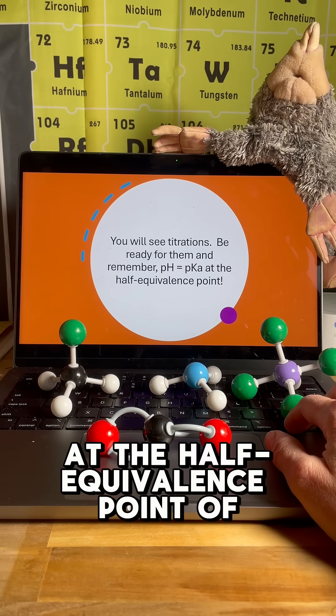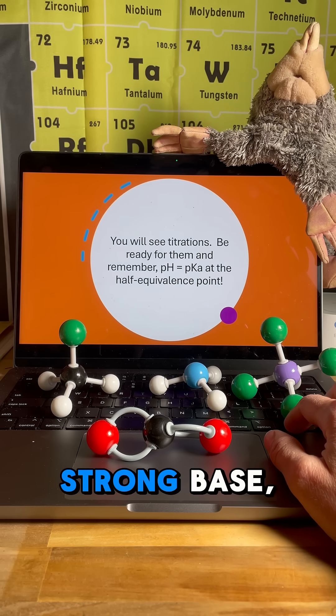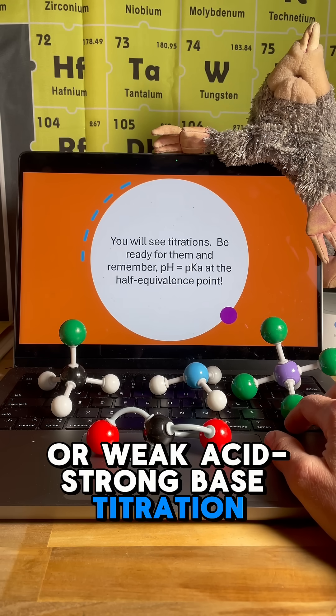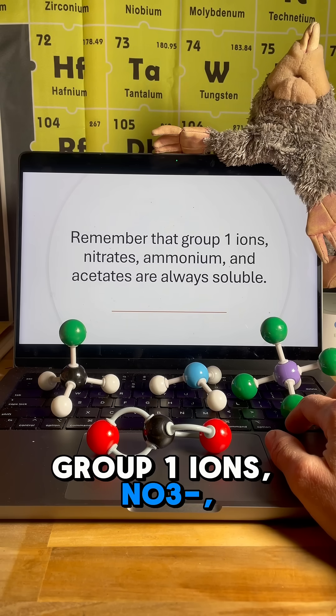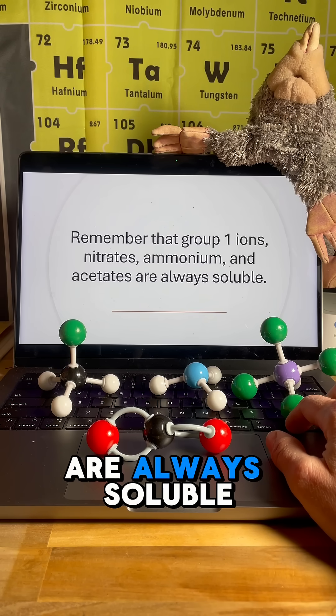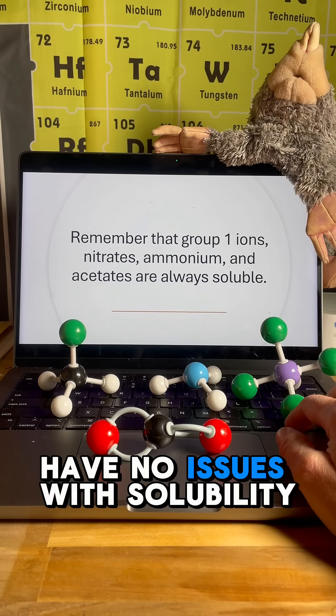Remember that pH equals the pKa at the half equivalence point of a weak acid strong base or weak base strong acid titration. You want to remember that group 1 ions, nitrates, ammonium, and acetates are always soluble. If you remember that, you will have no issues with solubility.